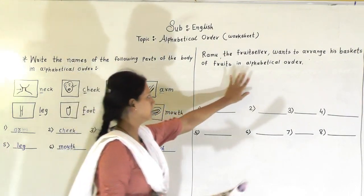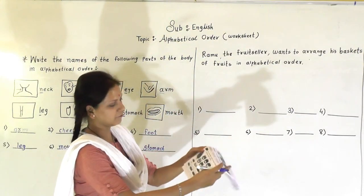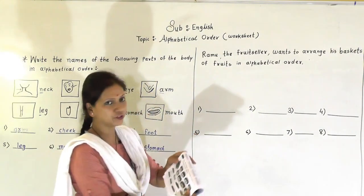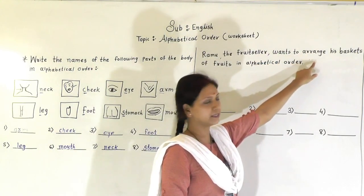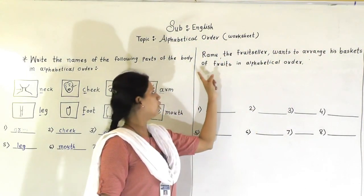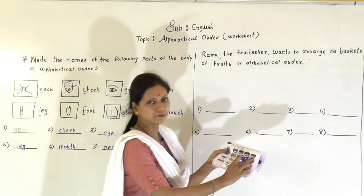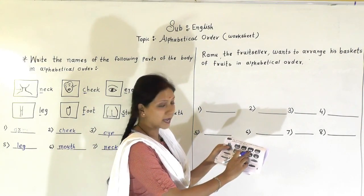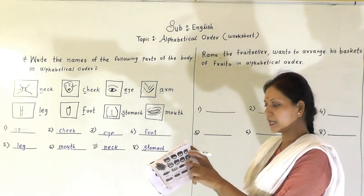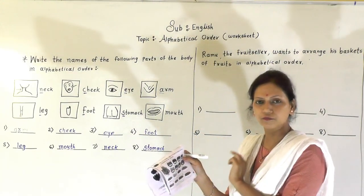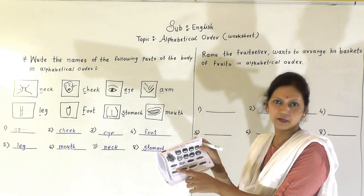So like this way you have to solve this question first. Same way here I not draw anything because it is very difficult to draw here. So same way you have to read this question. I am reading for you. Ramu the fruit seller wants to arrange his baskets of fruits in alphabetical order. So these are the baskets full of fruits. So grapes, pear, apples, oranges, bananas, mangoes, chikus and figs. These are the words of fruits. So again you have to arrange.